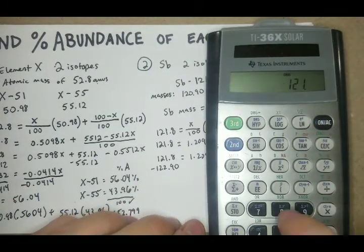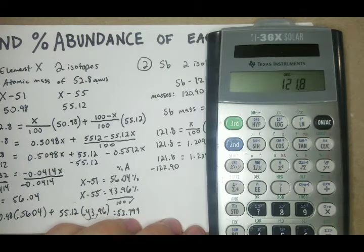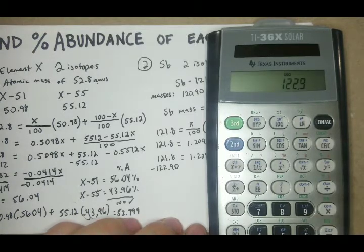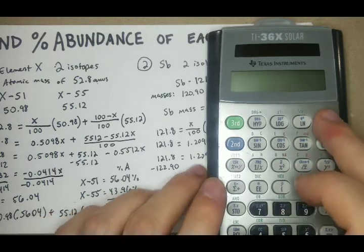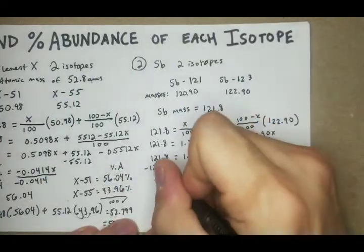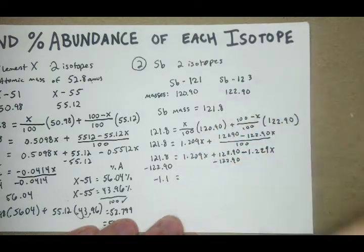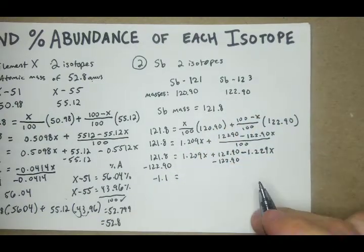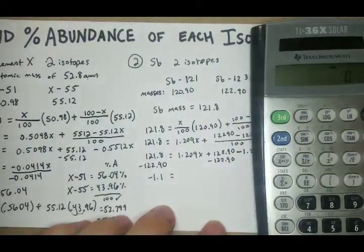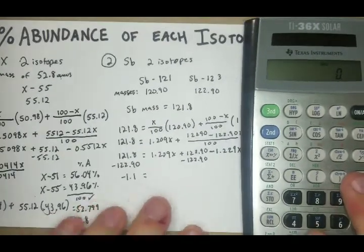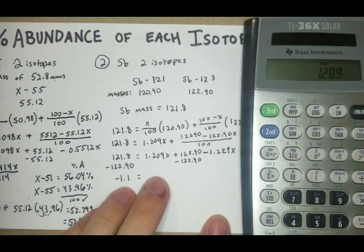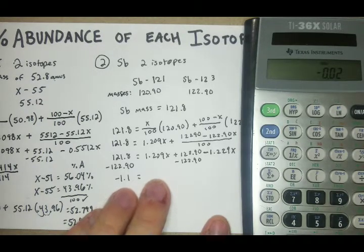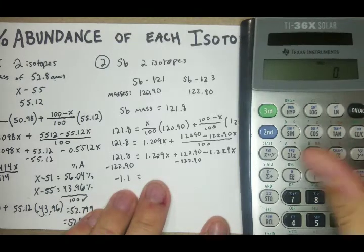121.8 minus 122.90 equals negative 1.1. Then we're going to do these out. That's going to be 1.209 minus 1.229, which is negative 0.02.